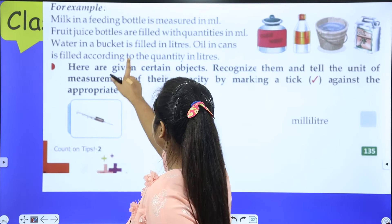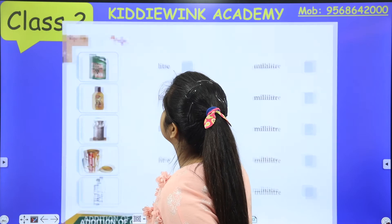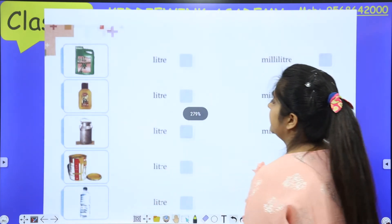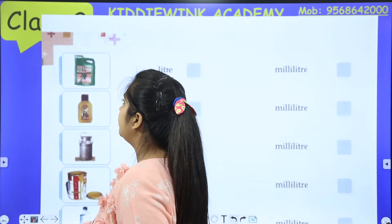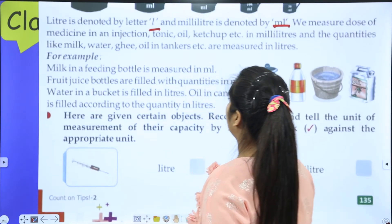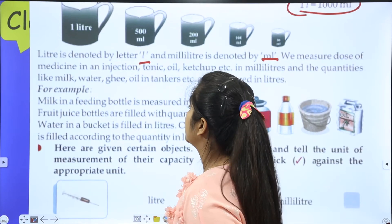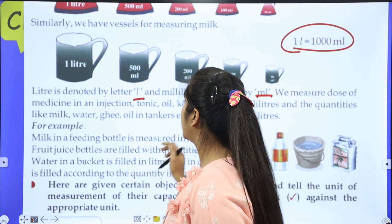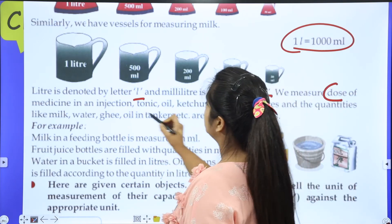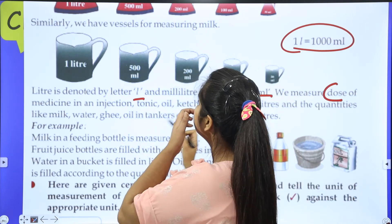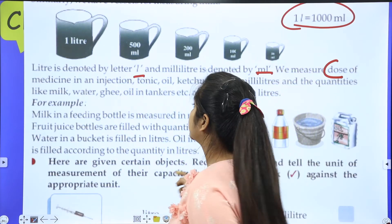Now let's see how to decide whether something is measured in liters or milliliters. Things like dose of medicine, tonic, oil in small quantity, and ketchup are measured in milliliters. And water, milk, and ghee are measured in liters.